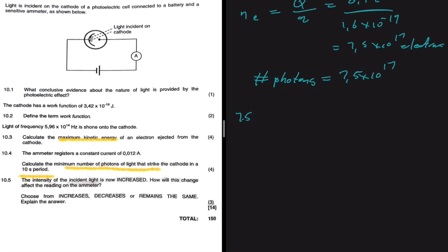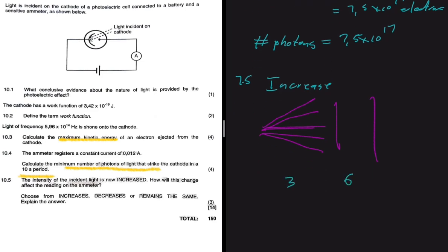The last question, 10.5, asks: if the intensity of the incident light is increased, how will this affect the ammeter reading? Choose from increase, decrease, or remain the same, and explain. The reading on the ammeter will increase. Increasing intensity increases the number of photons incident on the surface — for example, from three photons to six. Each photon ejects one electron, so more electrons means more current, since I equals Q divided by t.